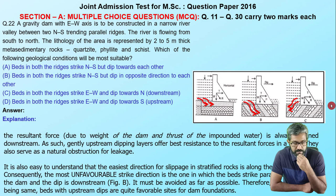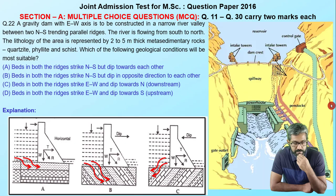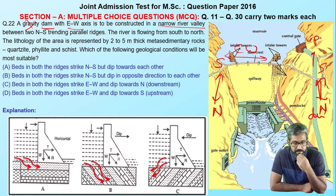Moving to the next question, it is related to engineering geology. Let's understand the concept. This is a dam with an east-west trend, to be constructed in a narrow valley. There are two north-south valleys. The river is flowing from south to north, so this is the upstream side and this is the downstream side. Now we need to determine the lithology of the respective ridges.